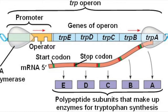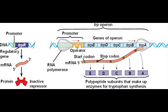Unlike the lac operon, which codes for a catabolic pathway — the breakdown of lactose — the trp operon is an anabolic operon. Instead of breaking down a molecule for energy, this operon creates an amino acid: tryptophan.